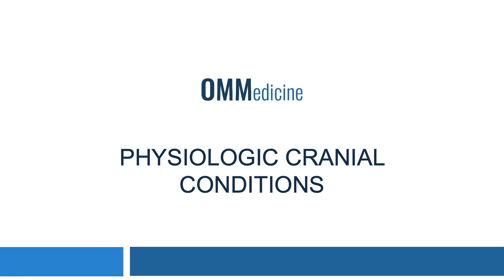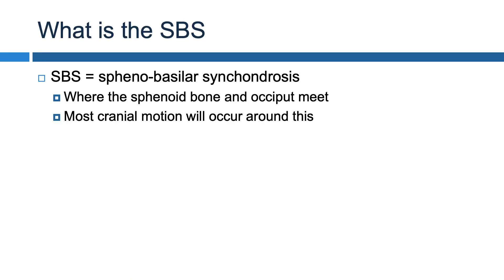Welcome to the OMM Medicines Module on Physiologic Cranial Conditions. Before we talk about any of the actual cranial conditions, we first need to discuss what the SBS, or the sphenobasilar synchondrosis, is. Simply put, this is the articulation between the sphenoid bone and the occiput. In terms of OMM, this is where the majority of the motion for cranial OMM is going to occur around.